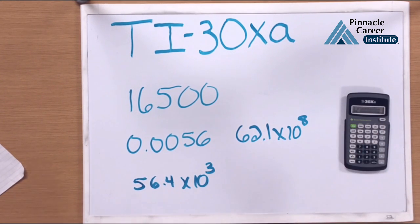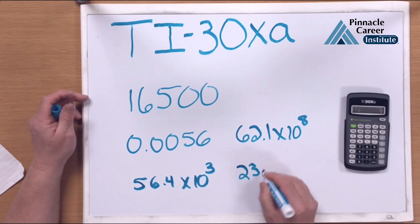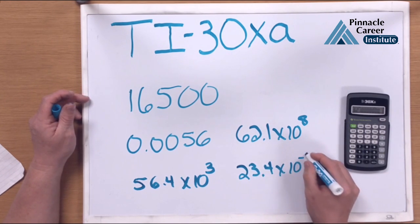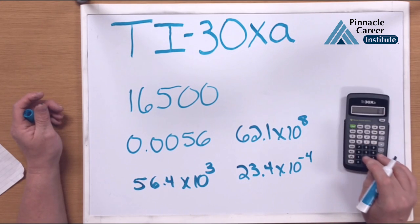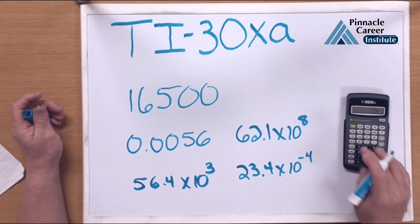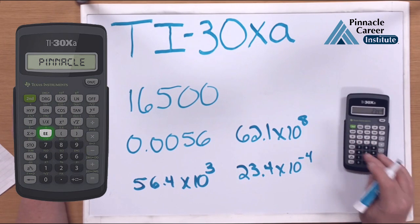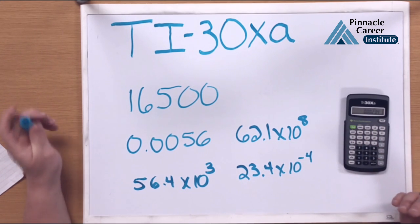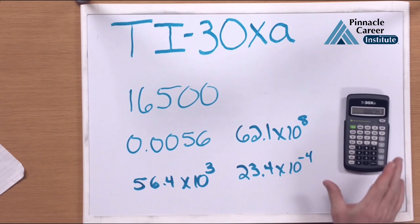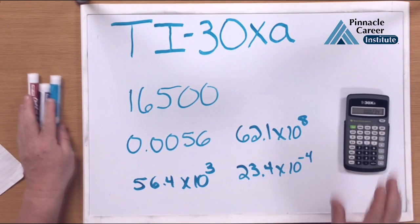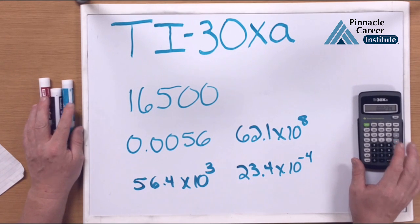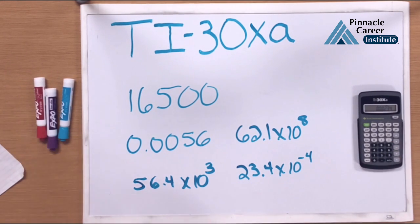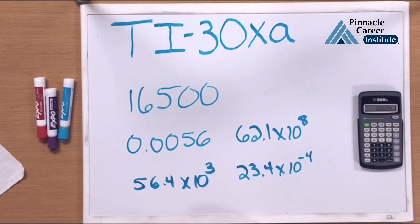Let's do a very small number in engineering: 23.4 times 10 to the minus 4. Enter 23.4, hit the E button, and type in minus 4. If we shift it back to a regular number, we get 0.00234. So we've learned how to use scientific and engineering notation to convert numbers from regular form, and how to use the E button to enter an engineering number directly into the calculator.